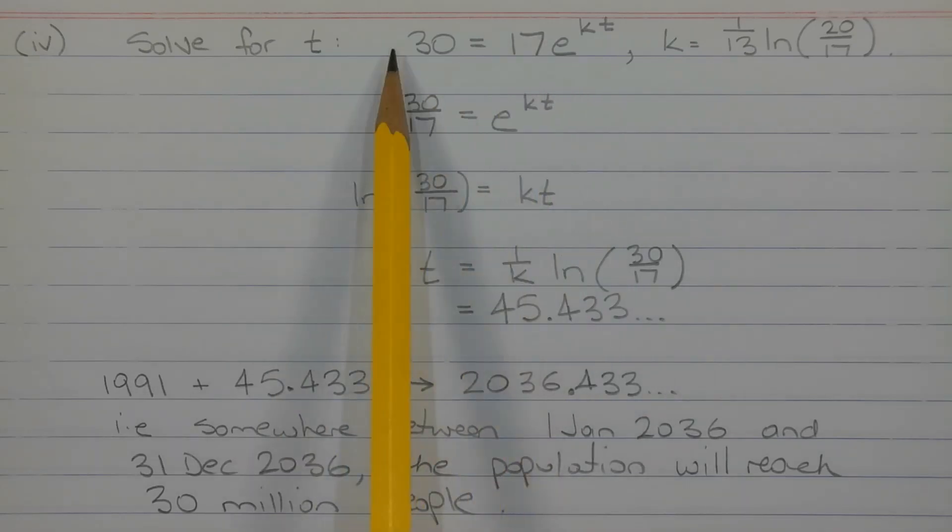Dividing both sides of the equation by 17, we get 30 over 17 is equal to E to the power of KT. We need to isolate the T, so we're going to take the natural logarithm of both sides. We get LN of 30 over 17 is equal to KT.